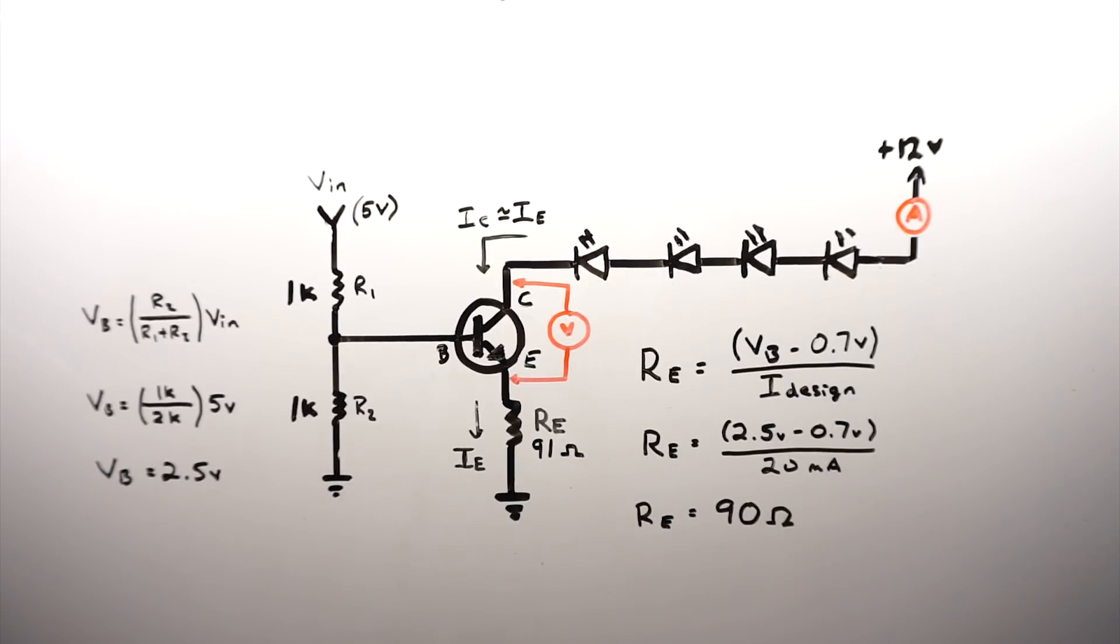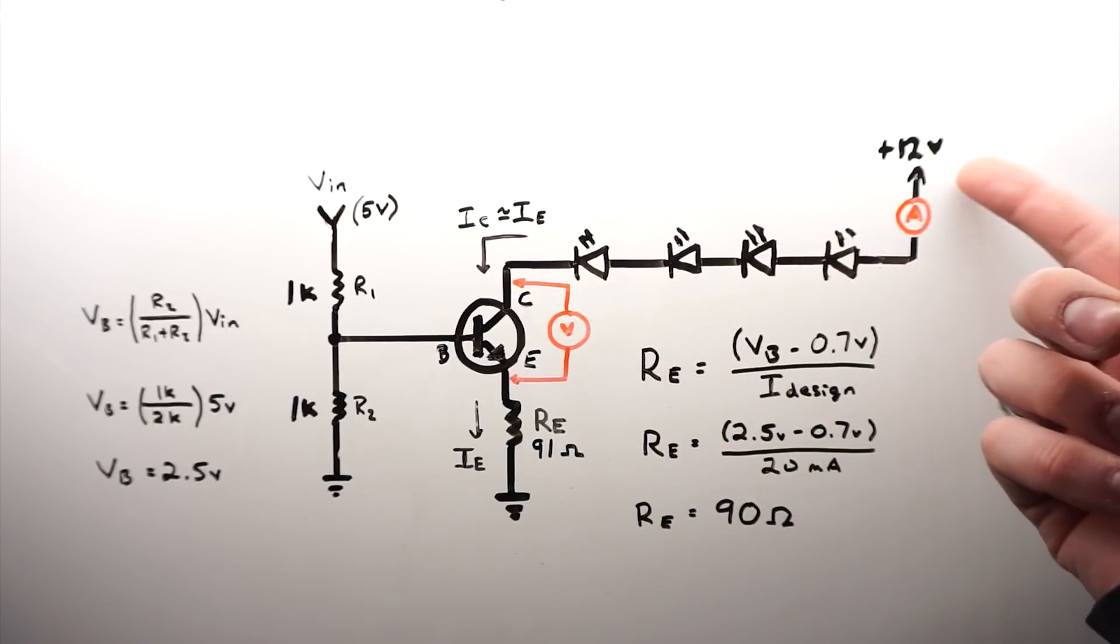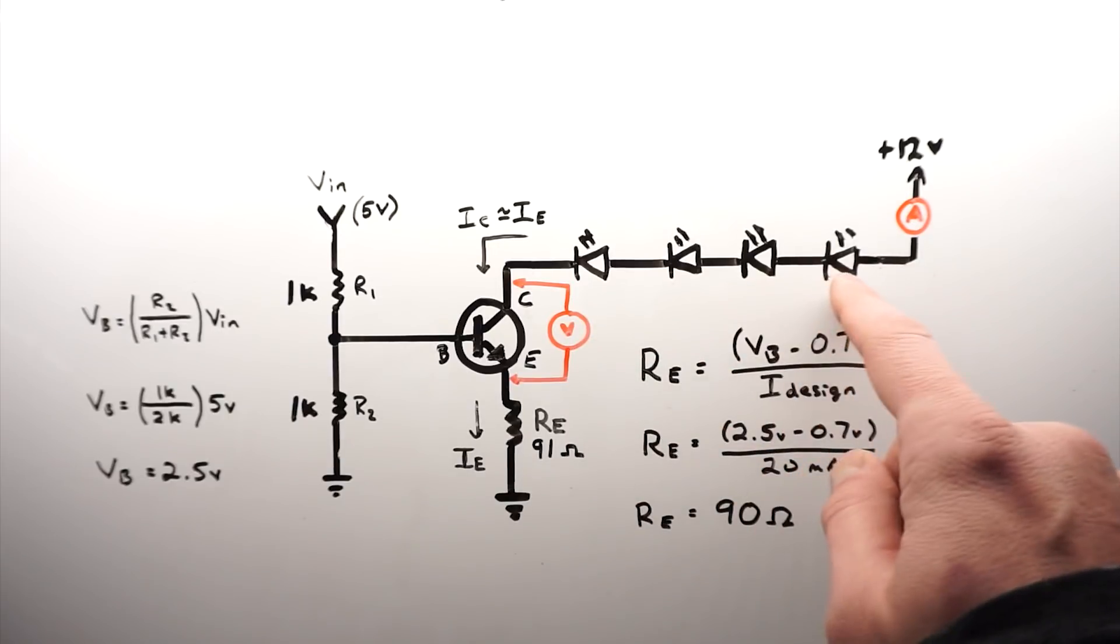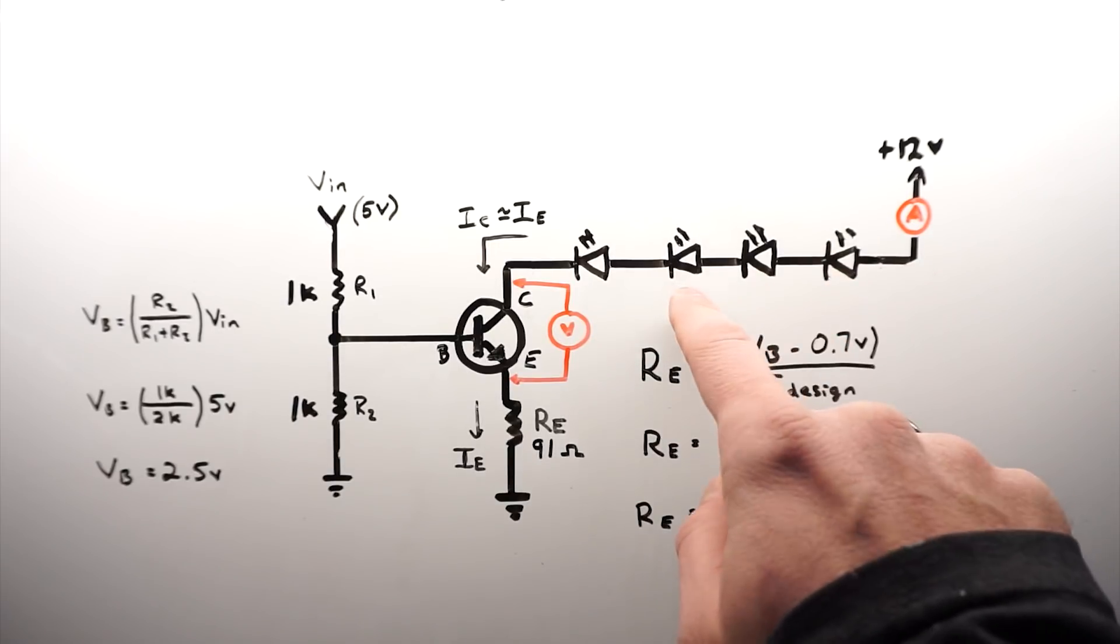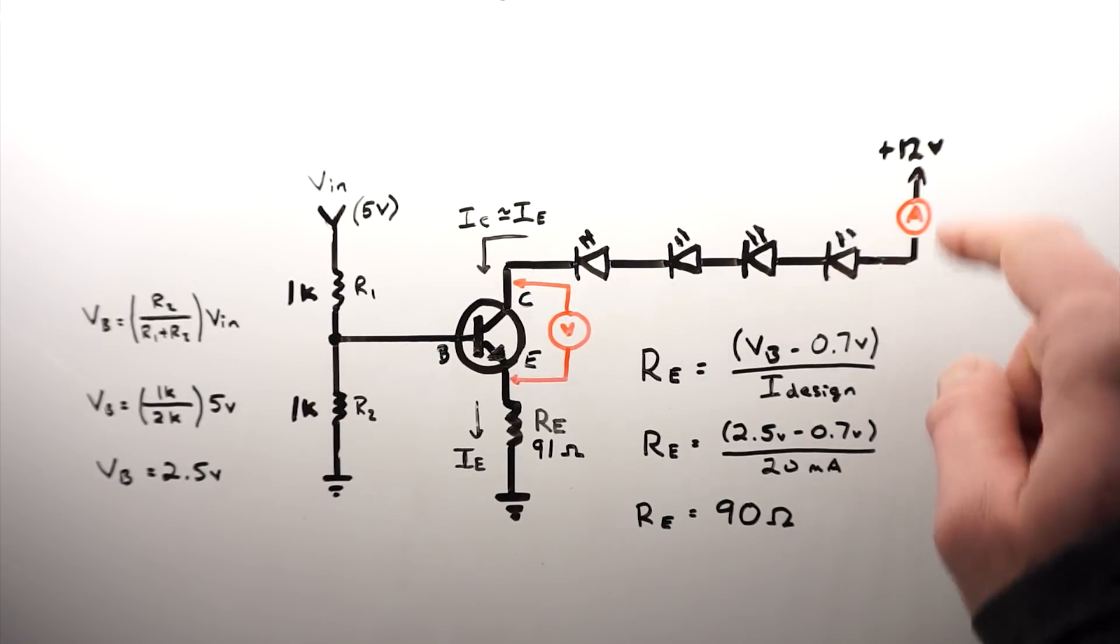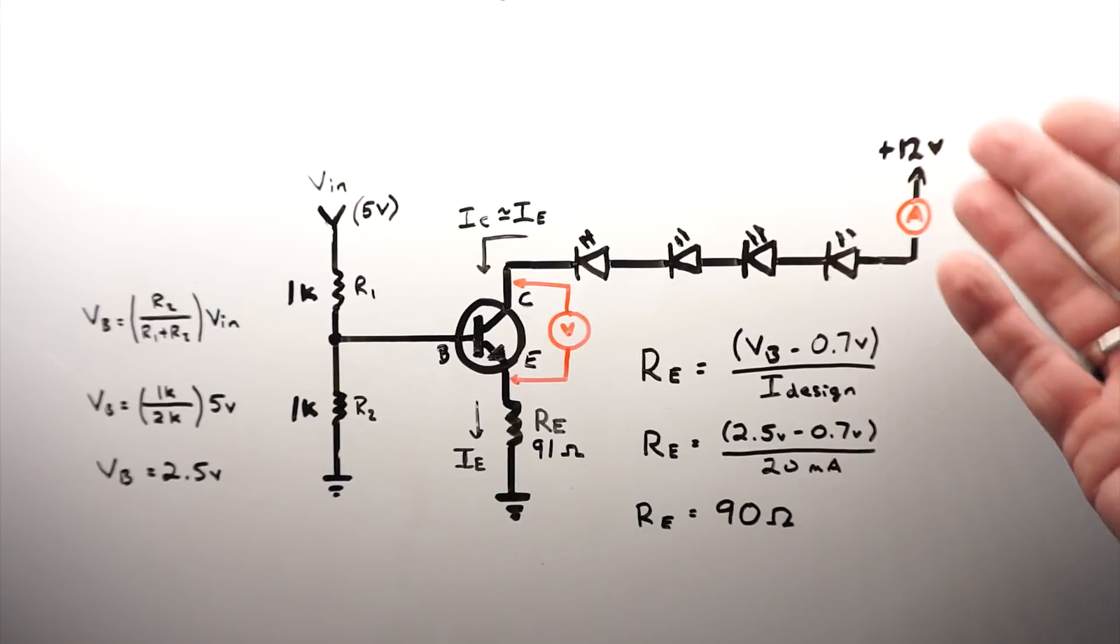So in dealing with current sources, we need to be aware of what's called compliance voltage. We need to make sure that whatever we're driving here, we have enough voltage supplied to apply to all of these LEDs. So we're consuming 2, 4, 6, 8 volts approximately, and some of the emitter resistor. If I'm only supplying 8 volts, that's not enough to turn all of this stuff on. So we need to stay a few volts above that.